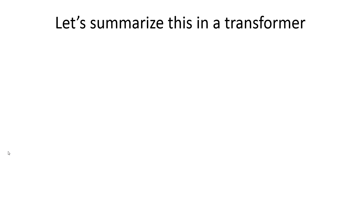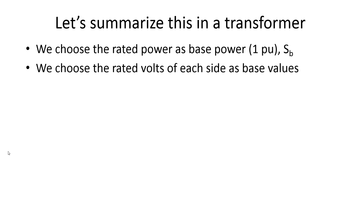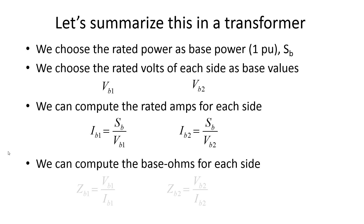Let's summarize for a transformer. We choose the rated power as the base power — that is one per unit. We choose the rated volts of each side as base values for the primary and the secondary. Then we compute the rated amps for each side. For ohms, we divide base volts by base amps, or more frequently, we divide the square of the base volts by the power base.